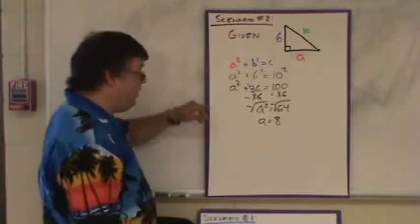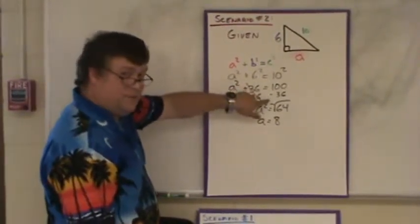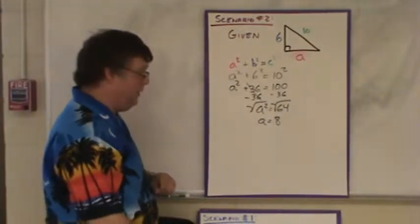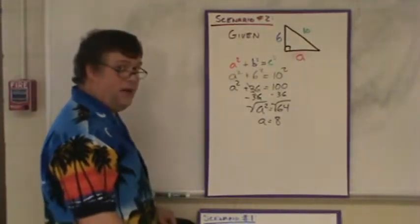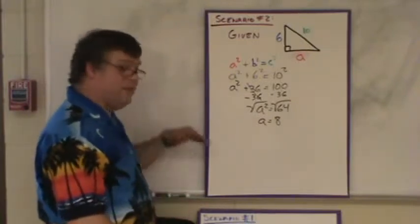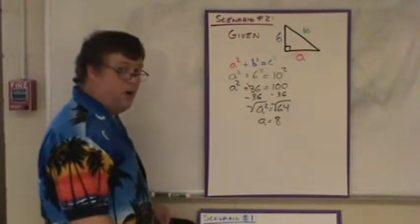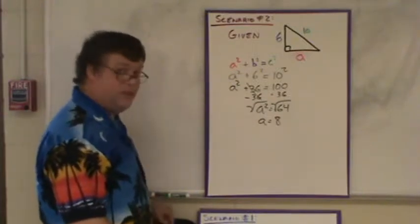So, in scenario two, I squared both numbers I was given, subtracted the smaller one from the larger one, and did the square root to solve. Very similar to scenario one. The only difference was the middle step. Instead of adding the two numbers, I subtracted the smaller one from the larger one before doing the square root.